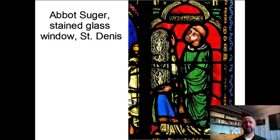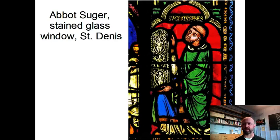We turn now to the main theoretician of the Gothic style, in particular of cathedrals. I want to speak about what we call the aesthetic philosophy of the Gothic — the conceptual underpinnings of why they created the way they did and what all these things were supposed to mean. Abbot Suger — his name is pronounced Suger — was the bishop of Saint Denis, a church on the northern fringes of Paris. In the mid-12th century, the building he is best known for is the choir and part of Saint Denis.